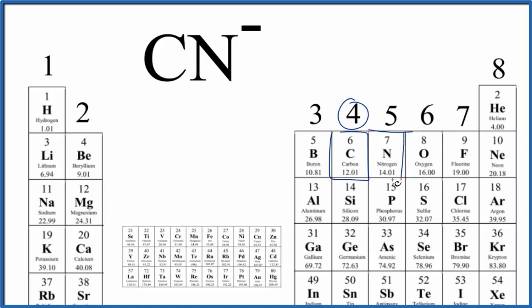Nitrogen, that's in group 15. That'll have five. So we have four plus five. And then this negative, that's an electron. Electrons are negative, so we have to add one more.